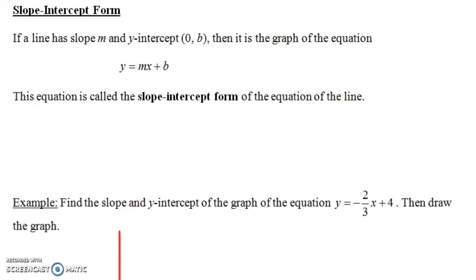In this video we're going to talk about slope-intercept form. If a line has slope m — we often use the letter m when talking about slope — and y-intercept (0, b), then it is the graph of the equation y equals mx plus b. When you see this form, where m and b are constants and x and y are variables, the graph is a straight line with slope m and y-intercept b, or (0, b). This equation is called the slope-intercept form of the equation of that line.